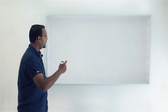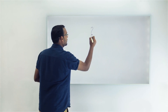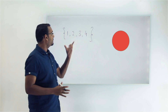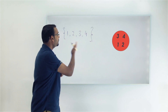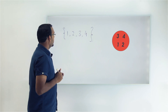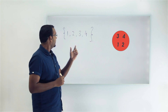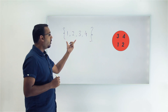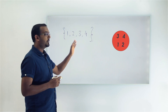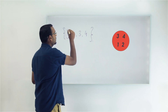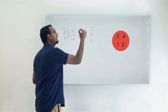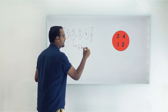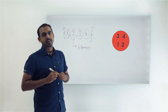Looking at the definition of a set — if I write a collection of the first four numbers, this forms a set. The curly brackets denote the start and end of the collection, and all values present in the set are separated by a comma. Every single value which is present inside the set is called an element of the set.